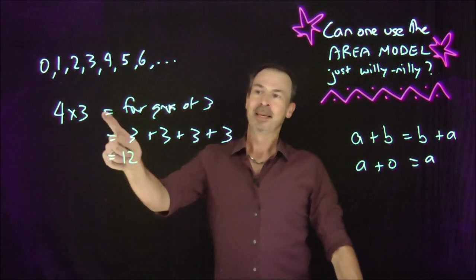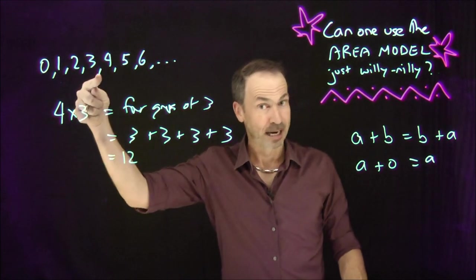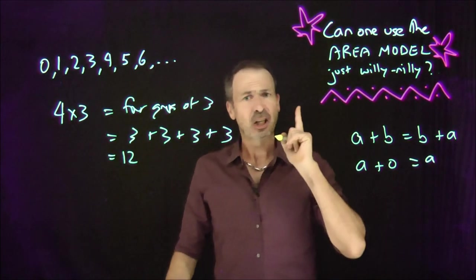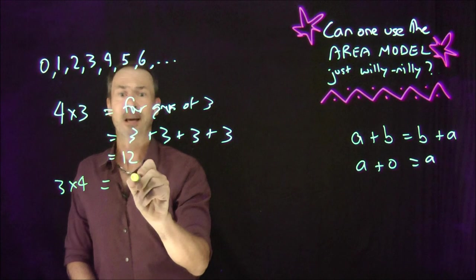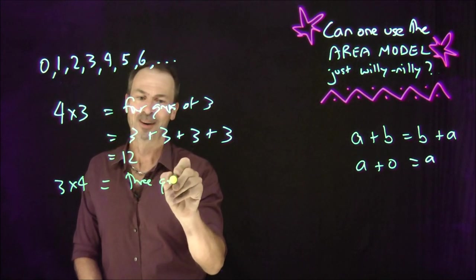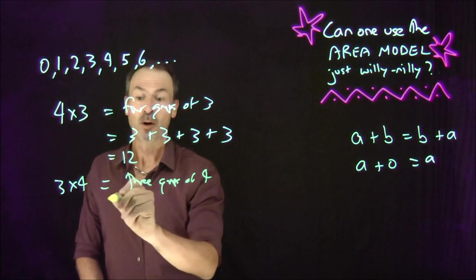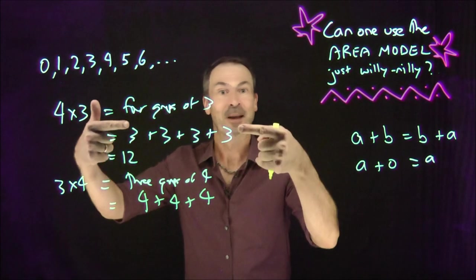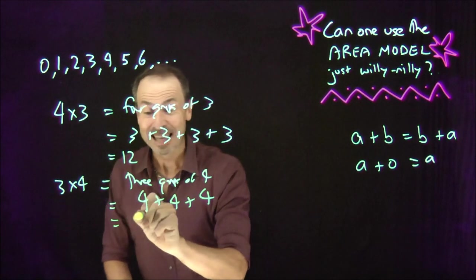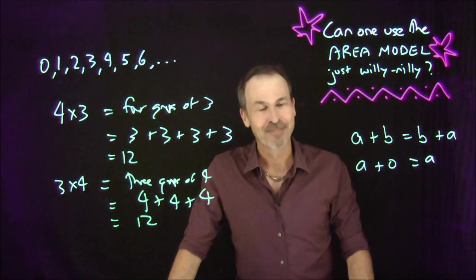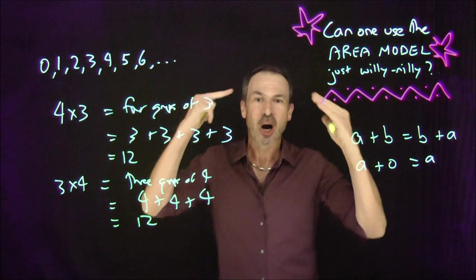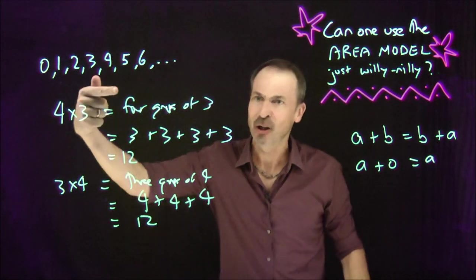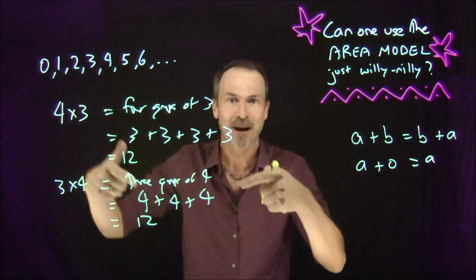That is repeated addition: one group of three plus another group of three plus a third group of three plus a fourth group of three — making 12 dots. But this definition is actually unsymmetrical: four groups of three is very different from three groups of four. Three groups of four would be a four plus another four plus another four. Yet amazingly, it also gives me 12. The same answer — but it's not obvious. It's actually not obvious with this unsymmetrical definition.